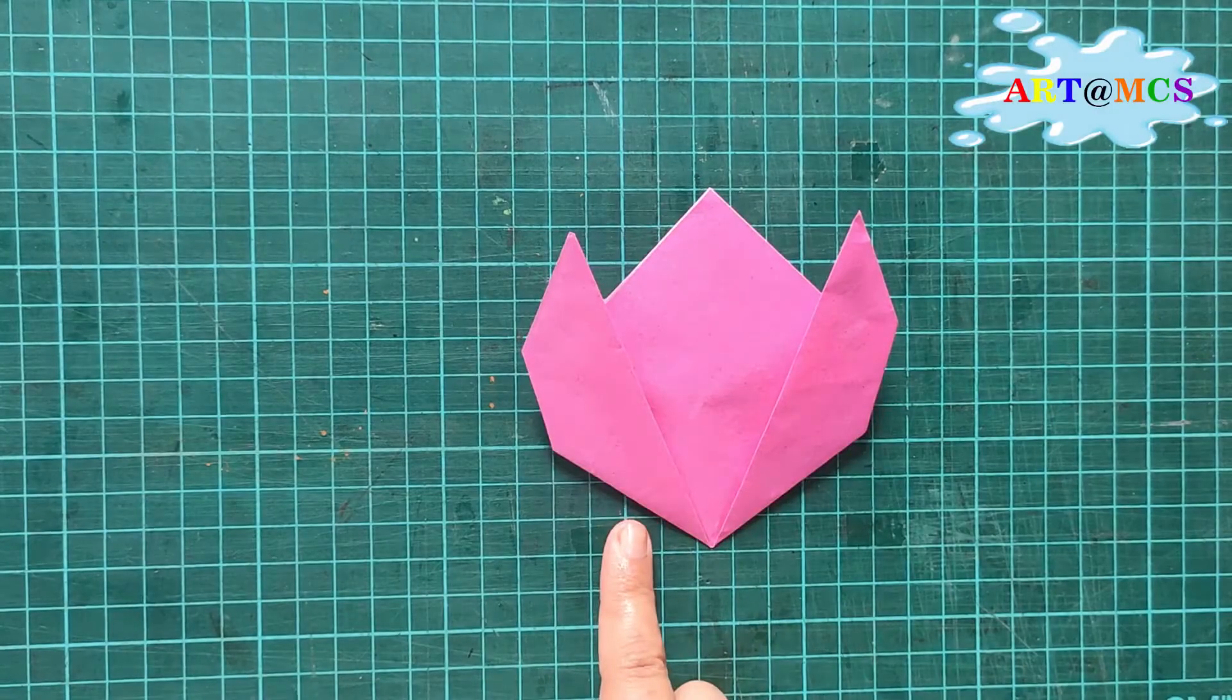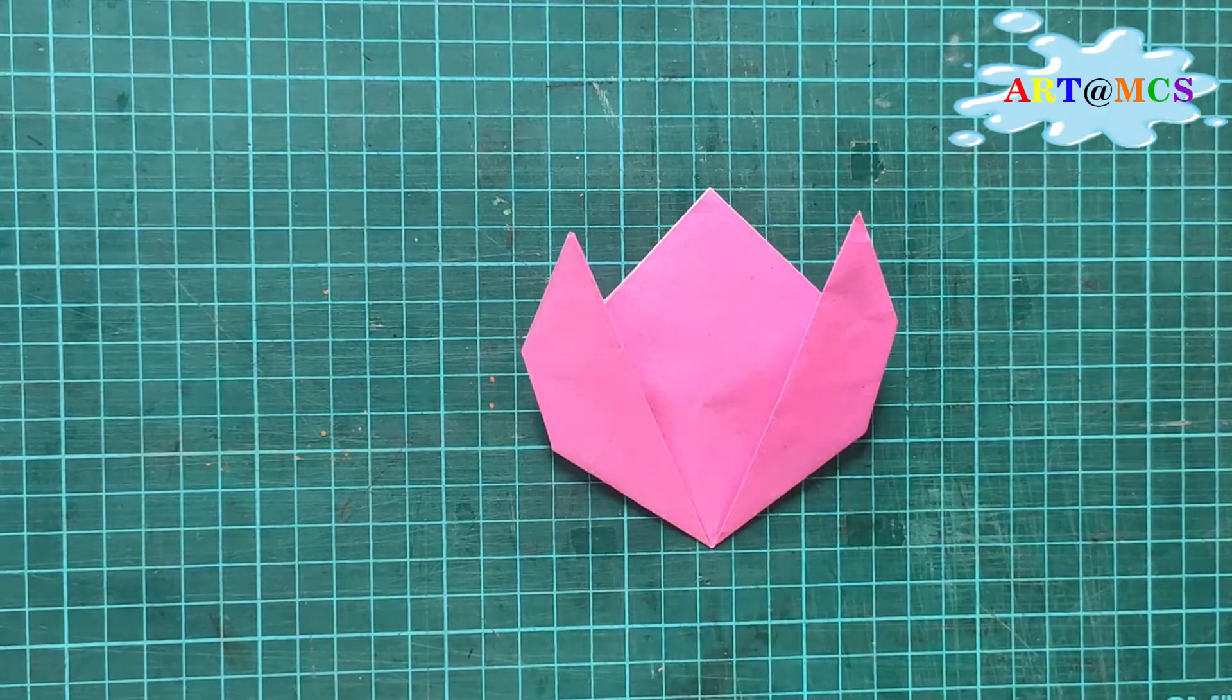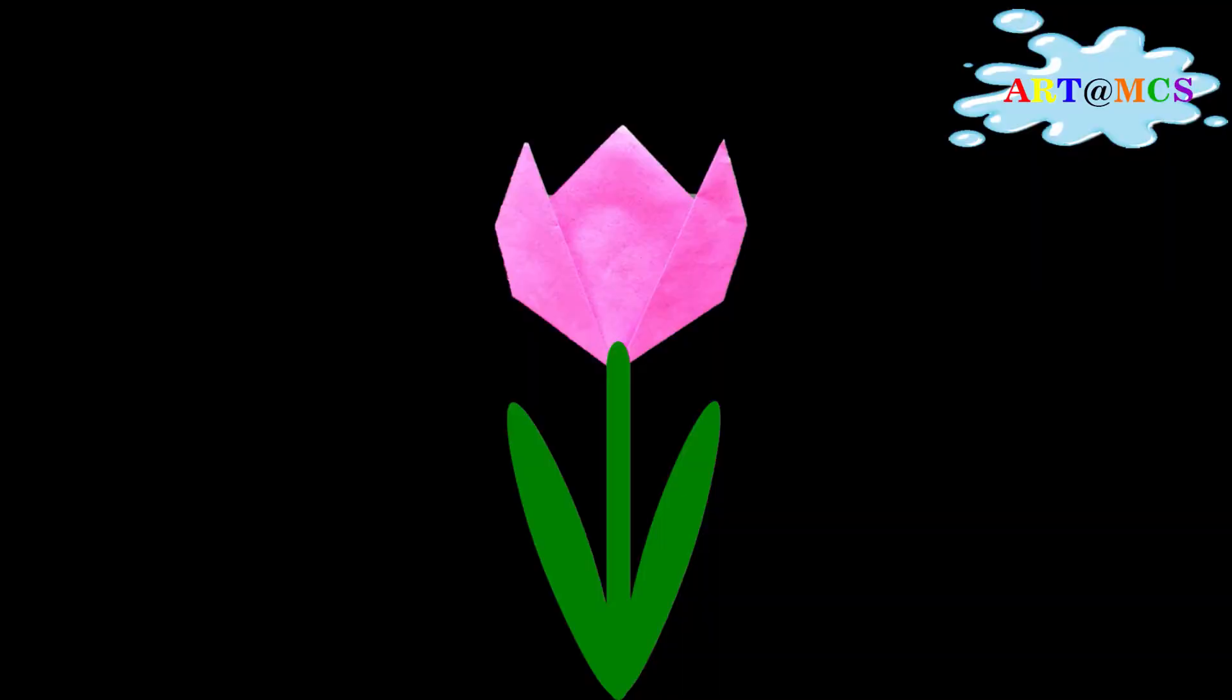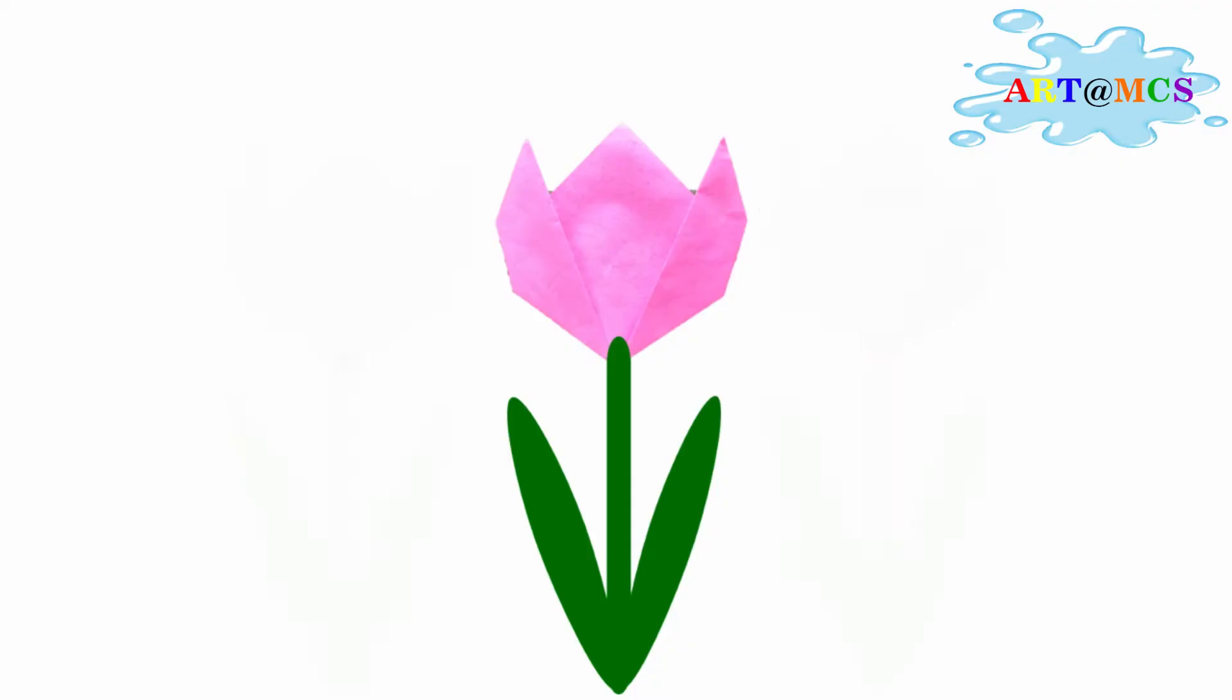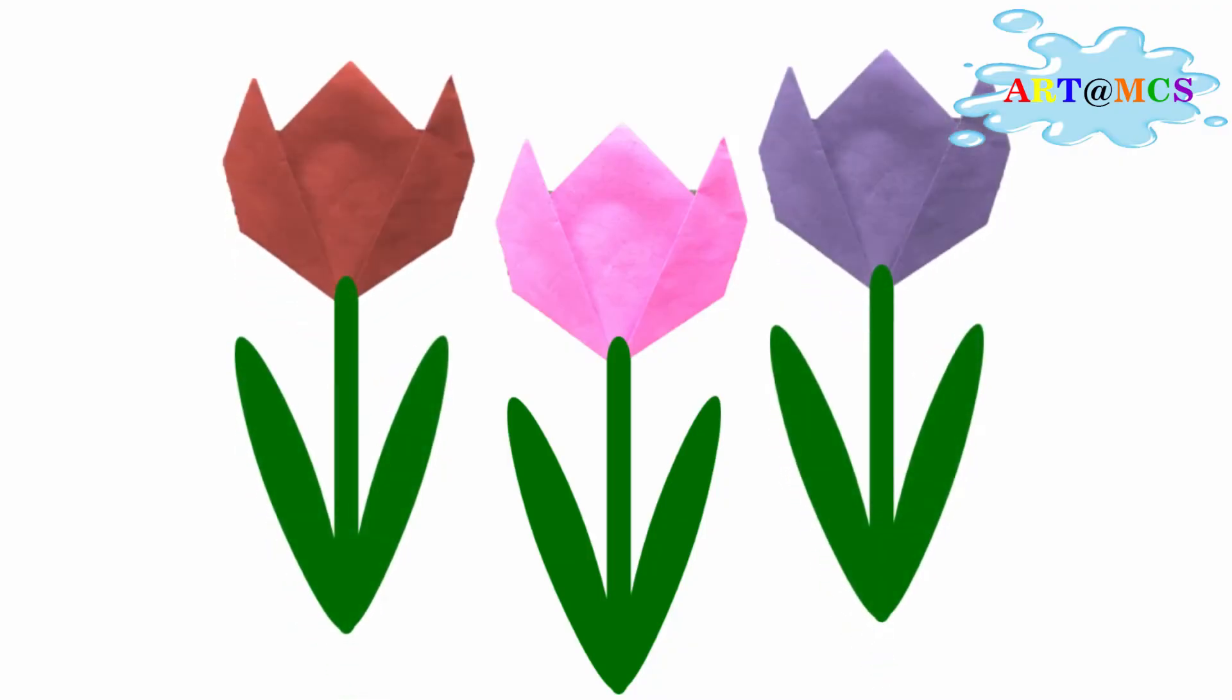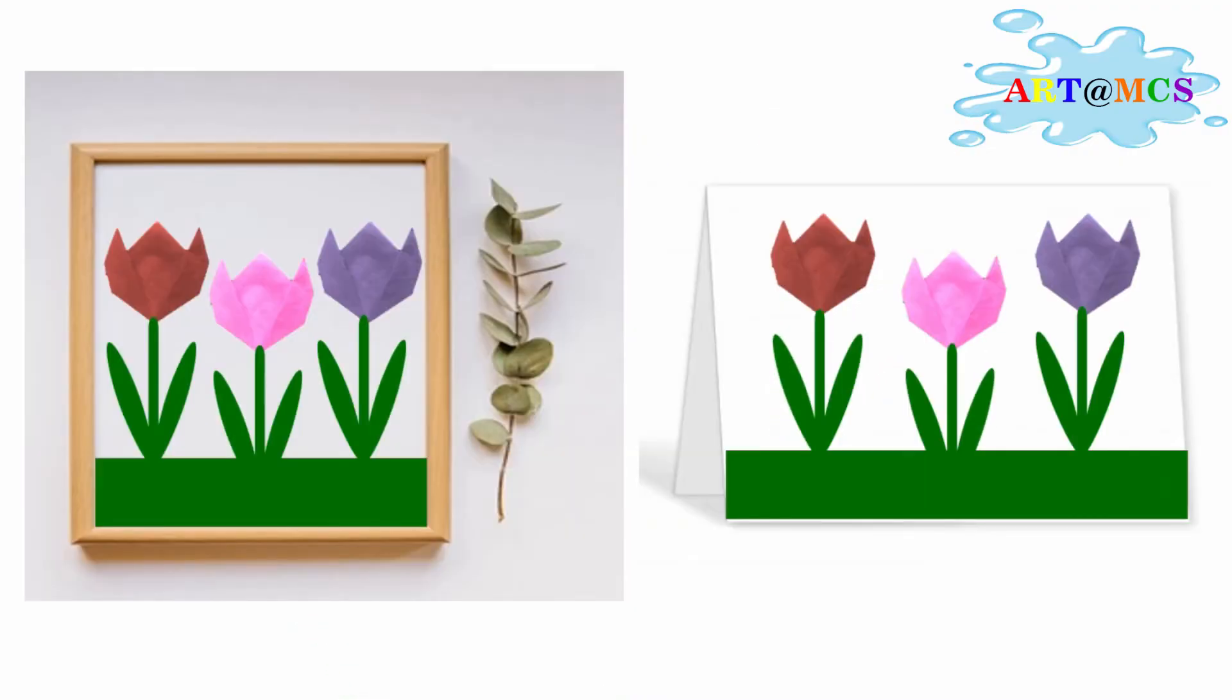You have your tulip flower ready with you. You can add a green stem and some leaves to it. Make some more, paste it on a sheet, and your work is ready. You can use it for decorating things or even for a greeting card. Hope you enjoy doing it, don't forget to share it with me. Goodbye!